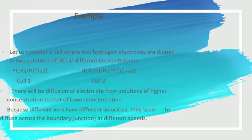For example, let us consider a cell where two hydrogen electrodes are dipped into solutions of HCl at different concentrations. We have two cells, two hydrogen electrodes, with two HCl solutions of different concentrations. The standard hydrogen electrode uses a platinum electrode. In the standard hydrogen electrode the ion concentration is given by activity A1.